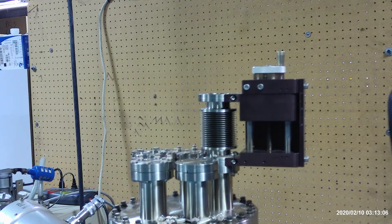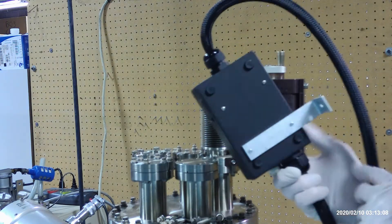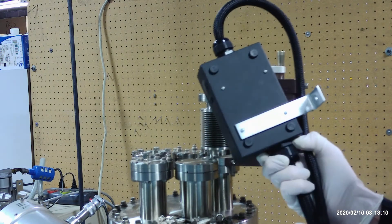Then we're going to install the preamp. The preamp comes with a bracket. Mount the bracket on the back of the preamp.